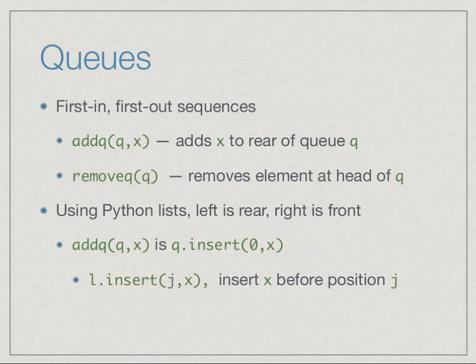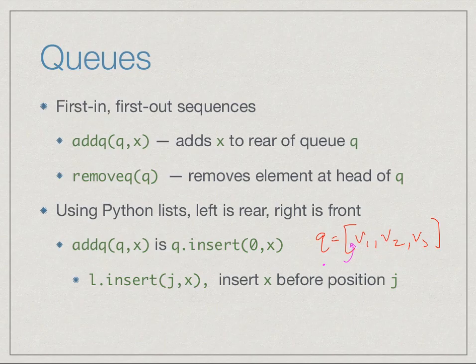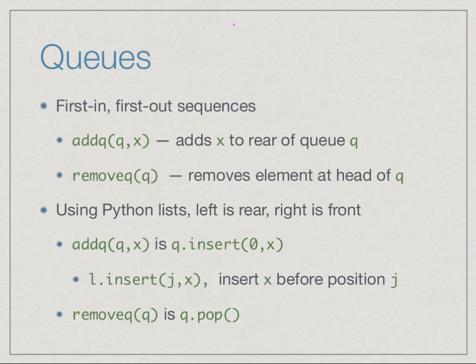If we have a list l and call l.insert(j, x), it puts the value x before position j. In particular, inserting at position 0 puts something before every element in the list. So add_queue(q, x) is the same as q.insert(0, x) — pushing x to the beginning. The queue then has its rear at the left and its head at the right, so we can still use pop() to remove the head. Both queues and stacks can be easily implemented using built-in lists.